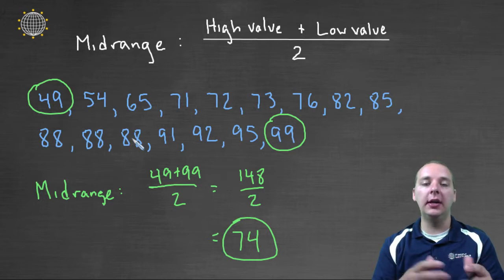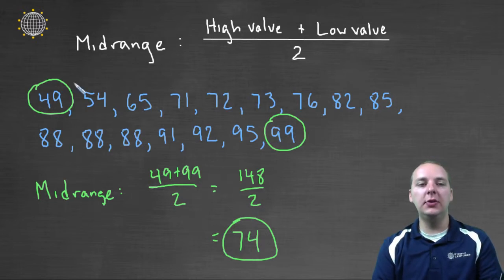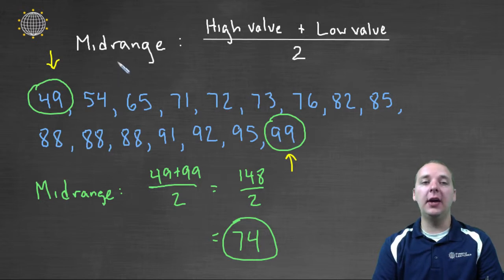And the downside is the midrange is heavily affected by outliers. If you have one student that scored much, much lower or much, much higher than all the other students, you can see how that's going to greatly affect your midrange.